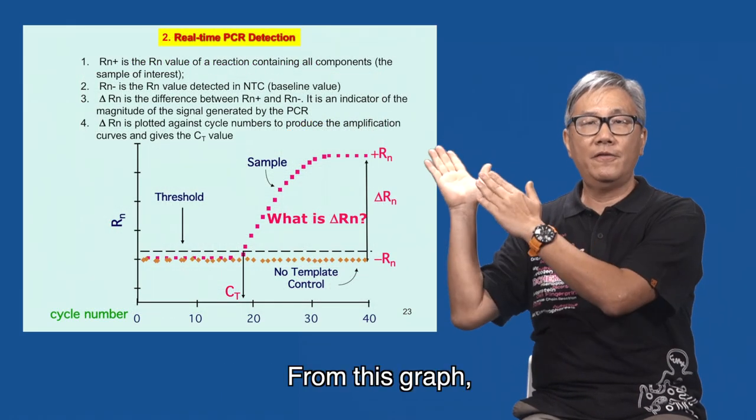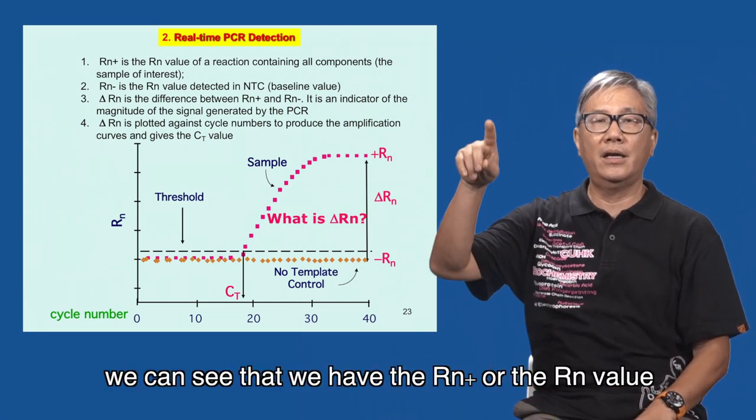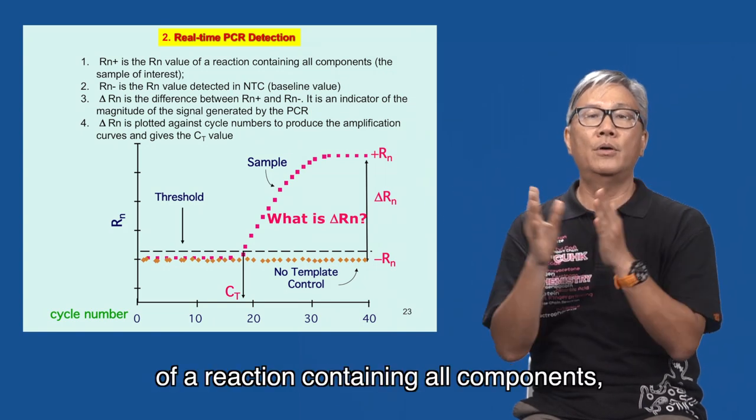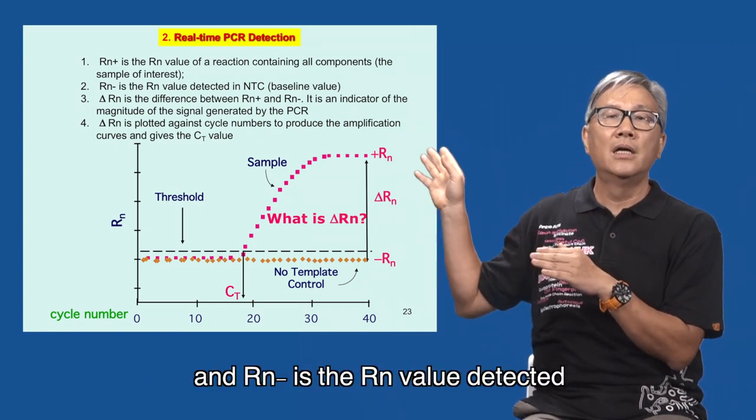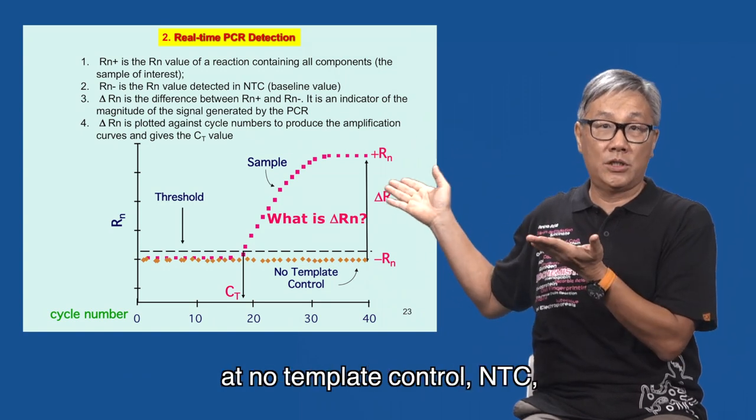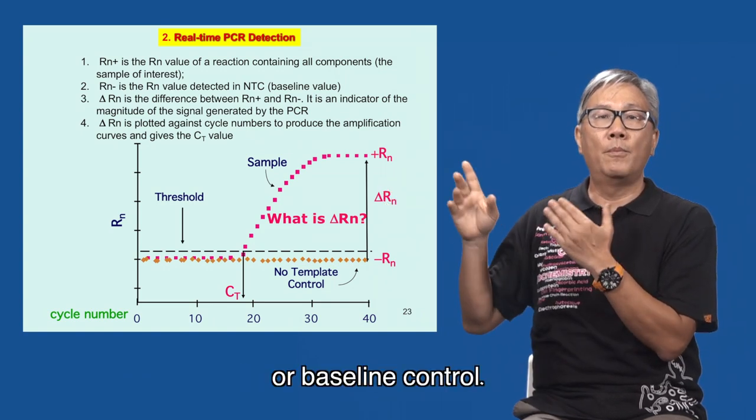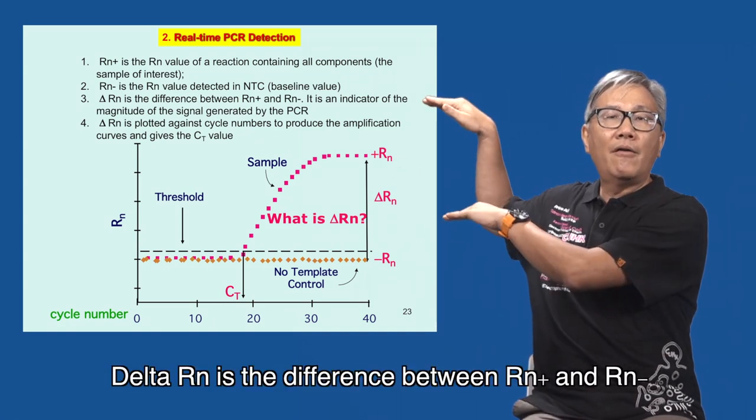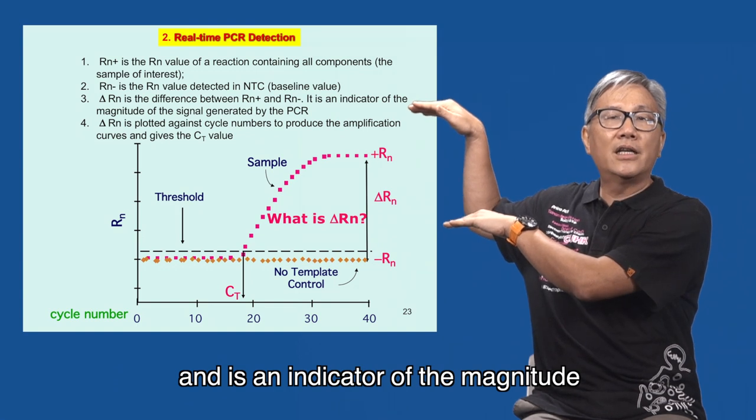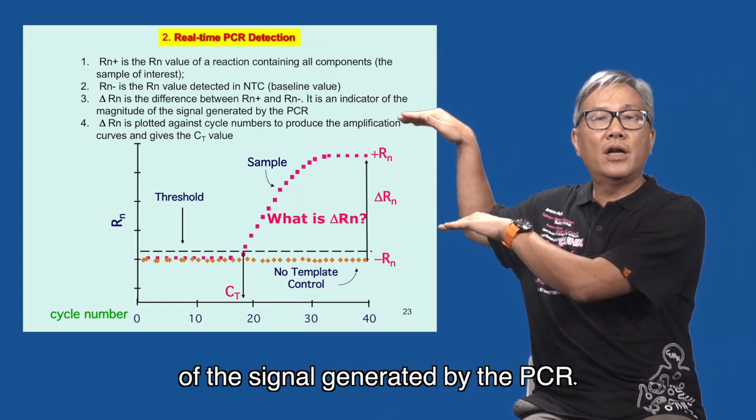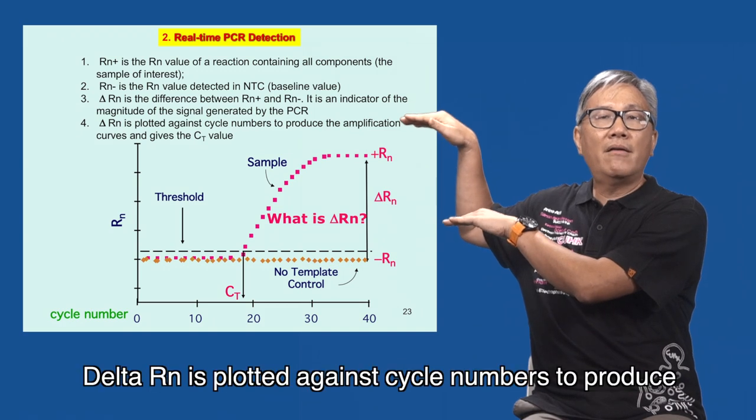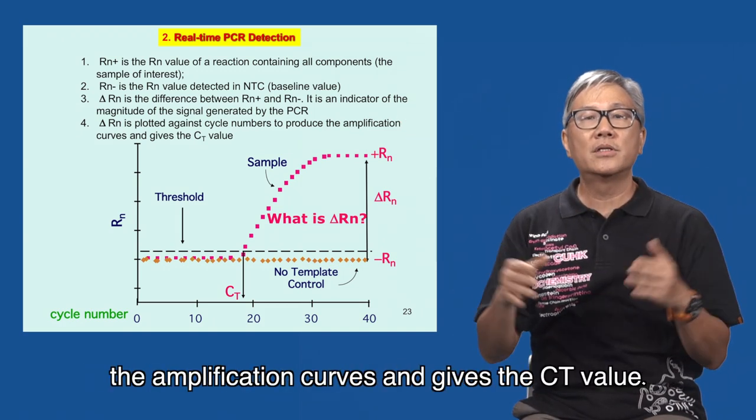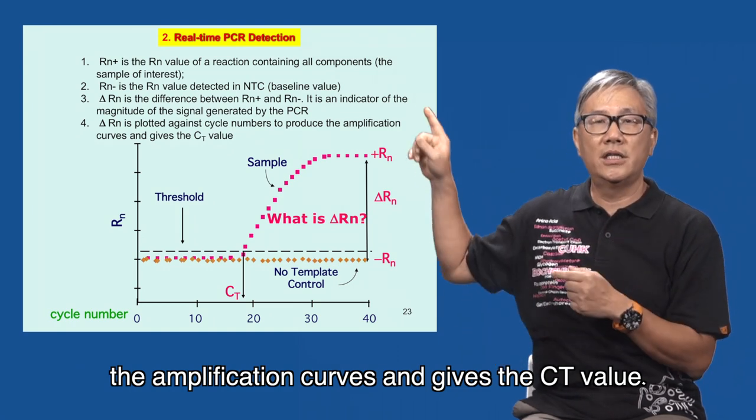From this graph, we can see that we have the Rn plus or the Rn value of a reaction containing all components, and Rn minus is the Rn value detected at low template control, NTC, or baseline control. Delta Rn is the difference between Rn plus and Rn minus and is an indicator of the magnitude of the signal generated by the PCR. Delta Rn is plotted against cycle numbers to produce the amplification curves and gives the CT value.